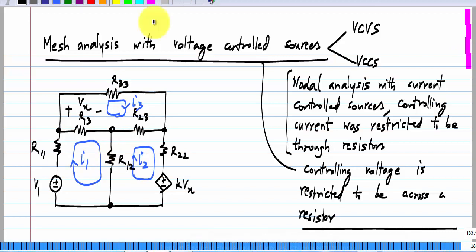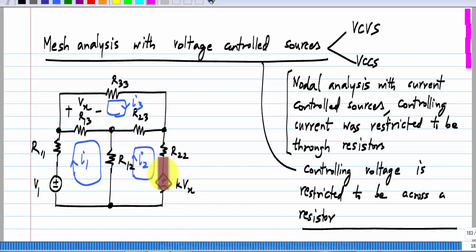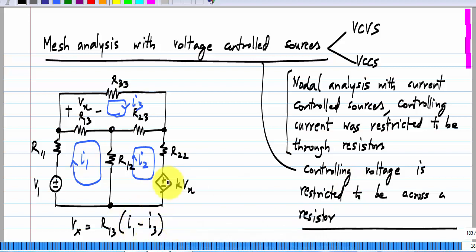Let me take this circuit. I have defined this voltage Vx across R13, and in the second mesh, instead of a fixed voltage source in our original circuit, I have a voltage-controlled voltage source K·Vx. We know that Vx is R13 times the current through R13, which is I1 minus I3.